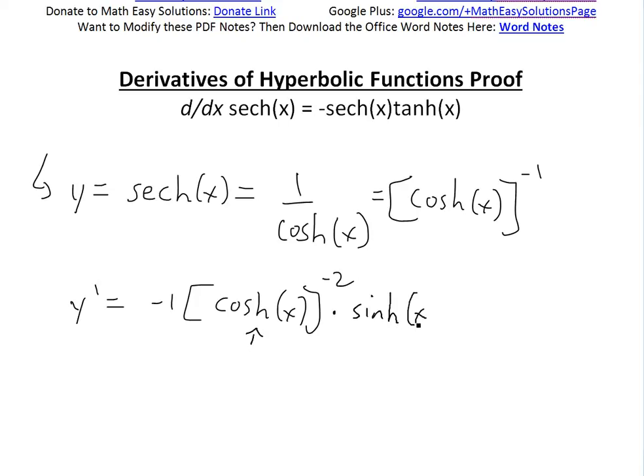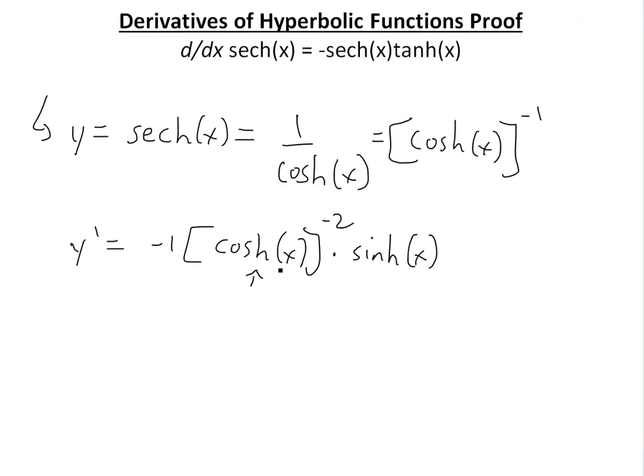You can see the proof of this in the video links below. So we have this part, and simplifying further, this equals negative sinh of x divided by cosh x squared.